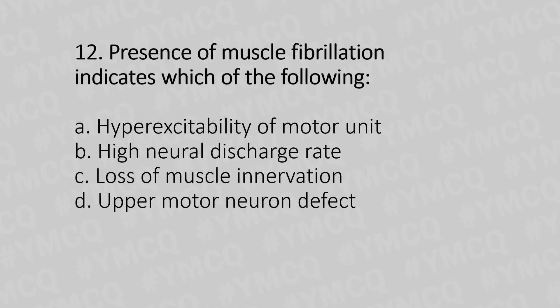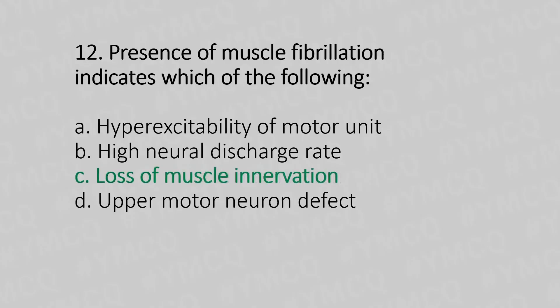Question 12: Presence of muscle fibrillation indicates which of the following? Option A: hyperexcitability of the motor unit. Option B: high neural discharge rate. Option C: loss of muscle innervation. Option D: upper motor neuron defect. The answer is option C — loss of muscle innervation.